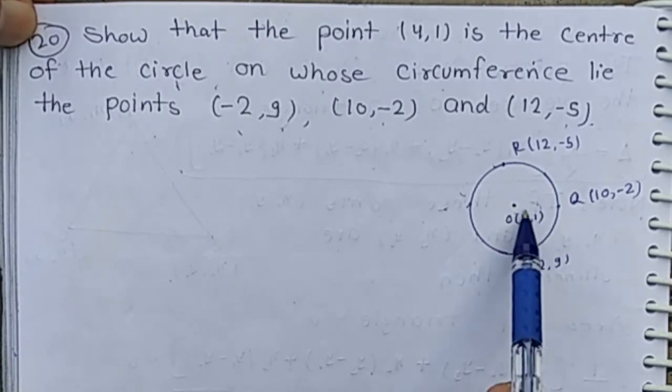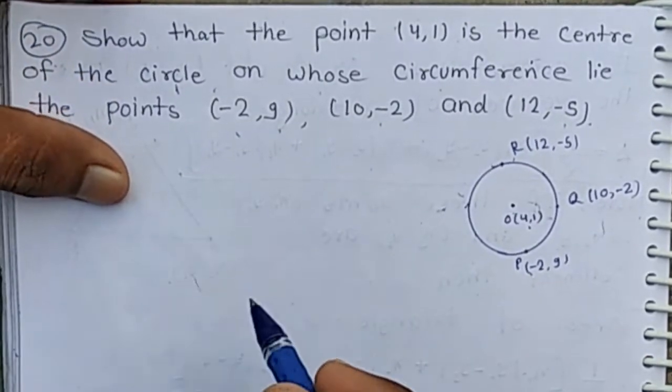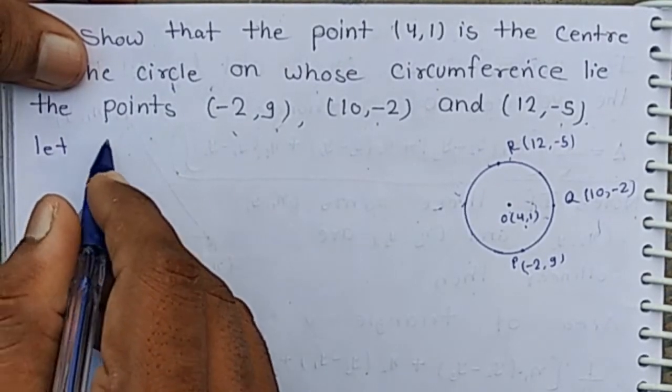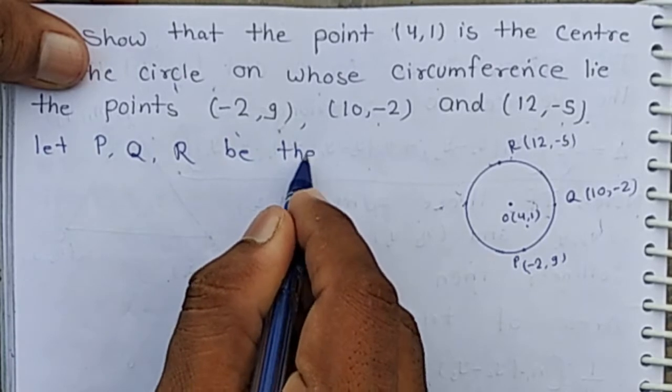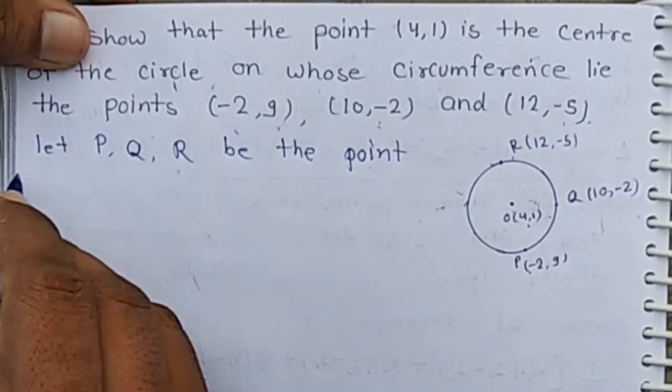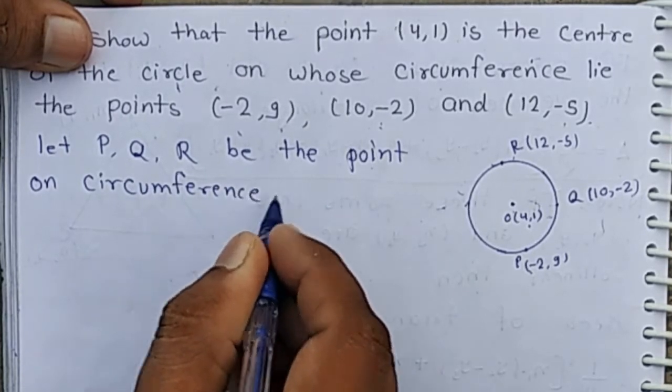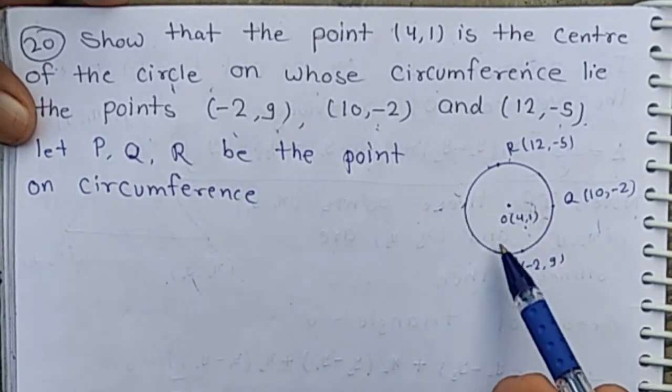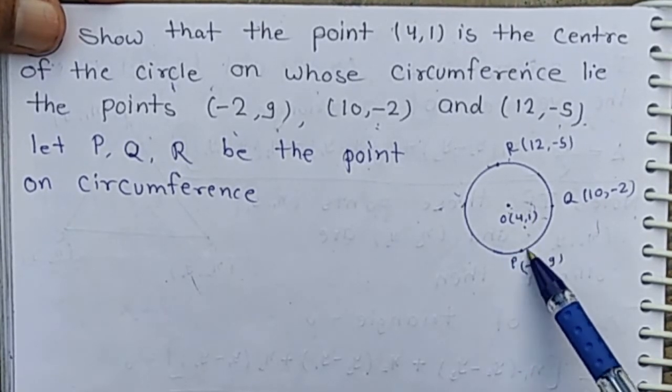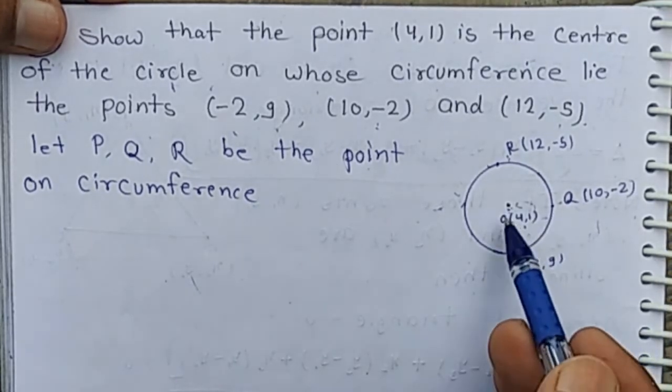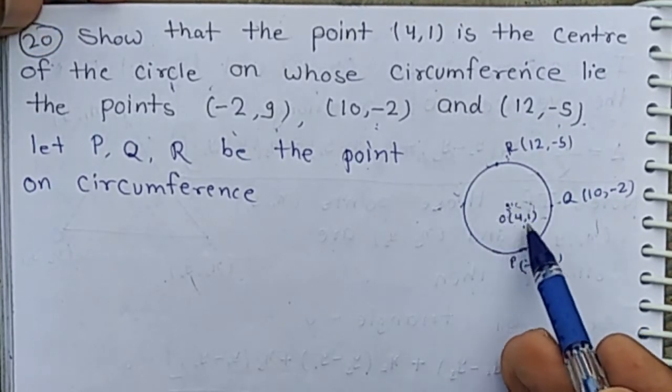(4,1) is the center of circle. Points on circumference are given: P, Q, R. Let P, Q, R be the points on circumference and O is (4,1). If O is the center of this circle, then its distance from circumference points are equal. OP is radius, OQ is radius, and OR is radius. We have to show that distance of point O and P, distance of point O and Q, distance of point O and R are equal, then O is the center of circle.